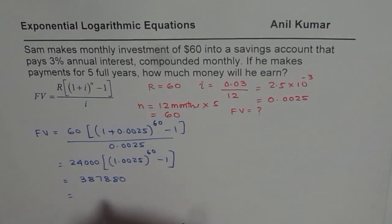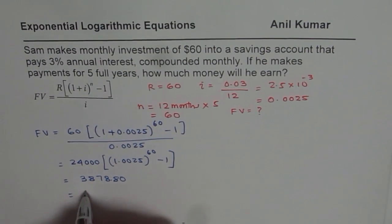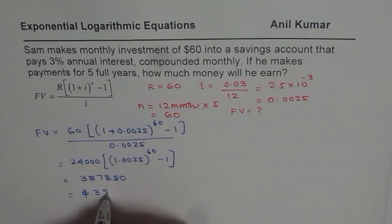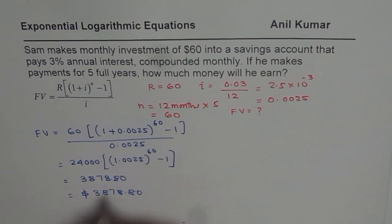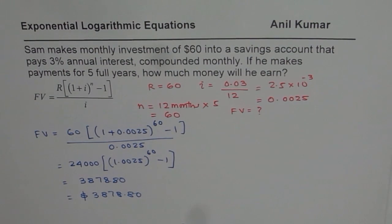That equals 3878.80. So that is how we could calculate our answer, and we get future value of approximately 3,878 dollars. In this particular application, we have taken up a simple case where the time is known to us.